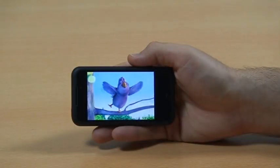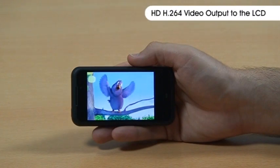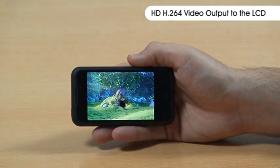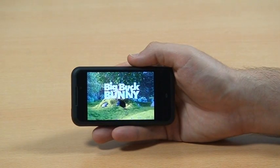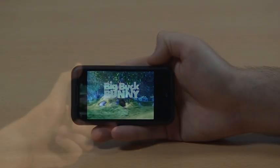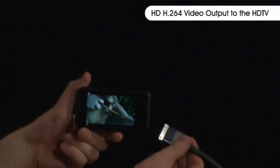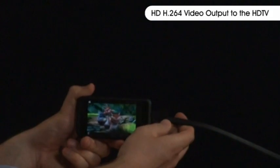So let's take a look at Android running on this device. Here you can see 720p H.264 video being played back and scaled down to the small screen. And then we see that same video when we attach our ZEgg to the HDTV being played back at its full resolution.